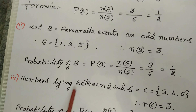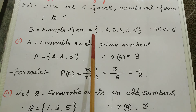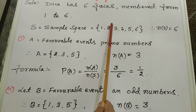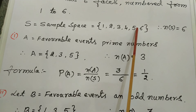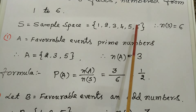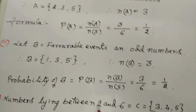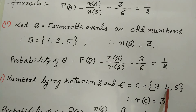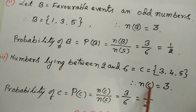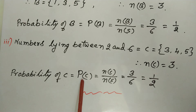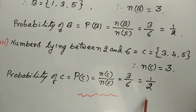Third: numbers lying between 2 and 6. From the possible events, numbers lying between 2 and 6 are 3, 4, 5. Therefore n(C) = 3. Probability of C = n(C) / n(S) = 3 by 6 = 1 by 2.